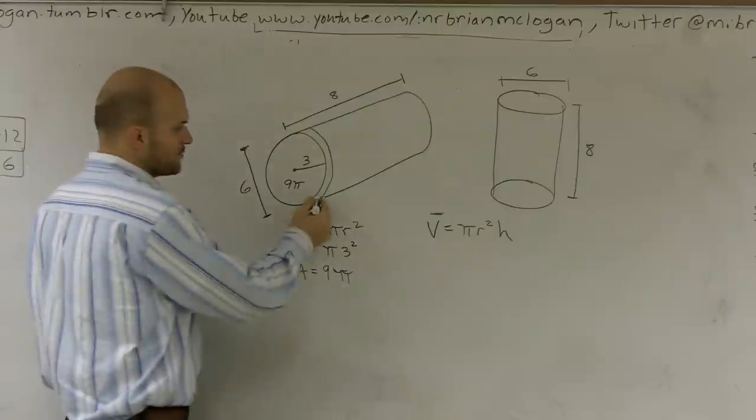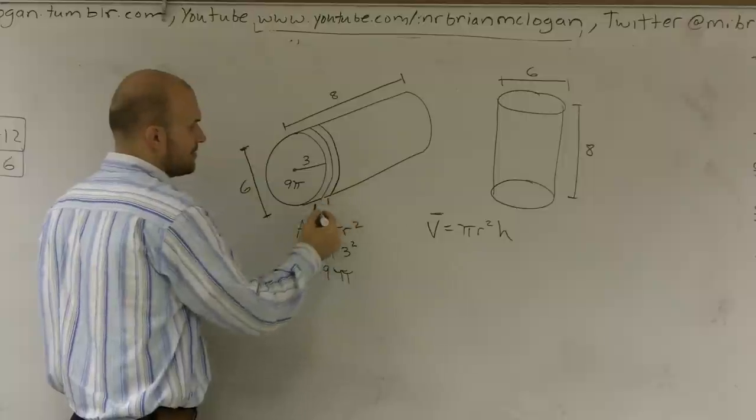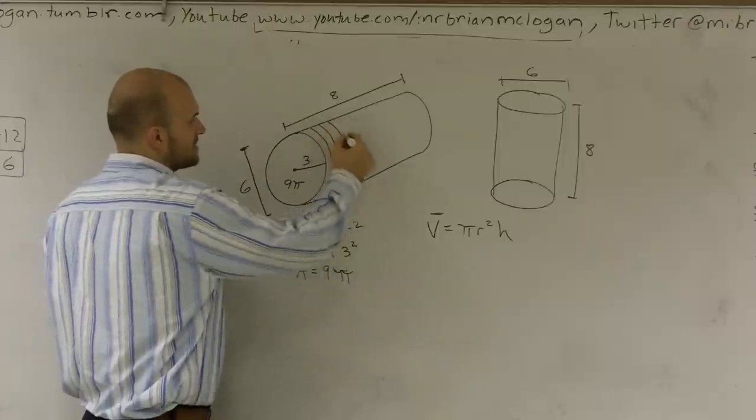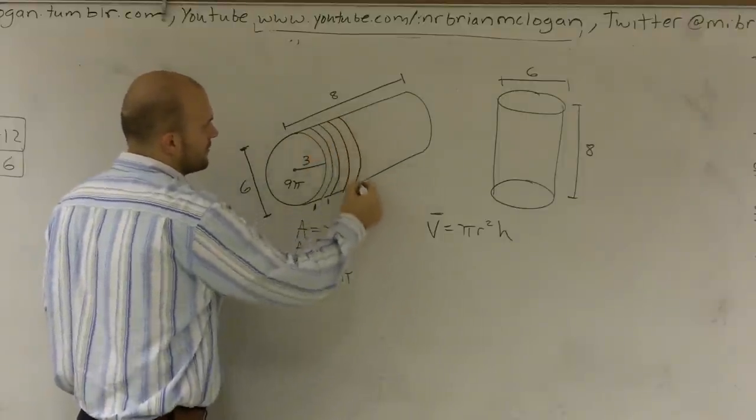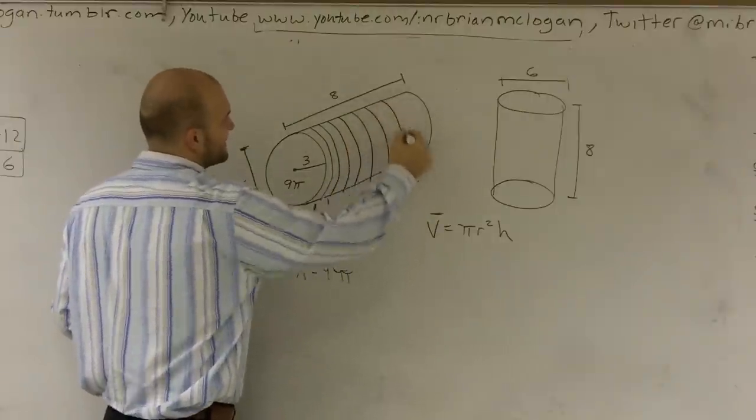So now what happens is if this is 1, we can do this a couple times. That would be a distance of 1. And so how many slices can I get? 1, 2, 3, 4, 5, 6, 7.